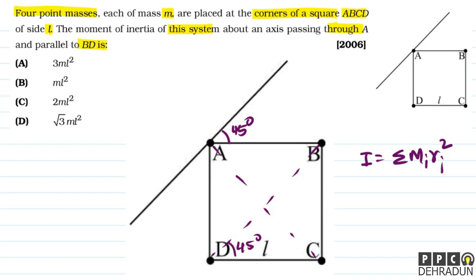अगर A और C को join करेंगे तो यह angle भी 45 degree है। और यहाँ पर square का side length L दे रखा है, तो हम लोग जानते हैं कि जो diagonal है उसकी length root 2L हो जाएगी। मतलब A और C के बीच की जो दूरी है — AC = root 2L है।